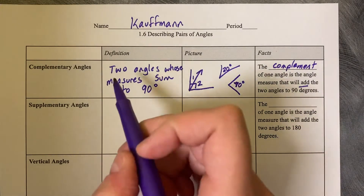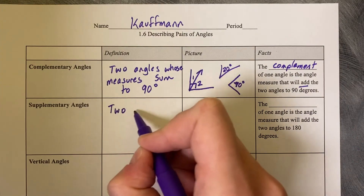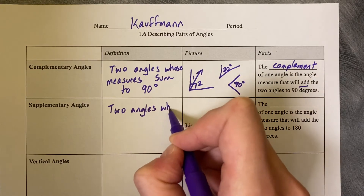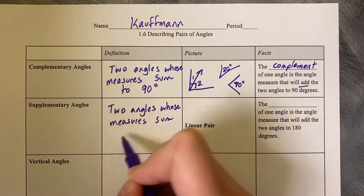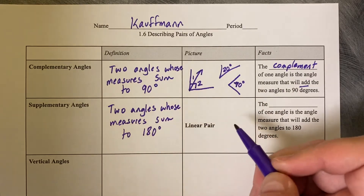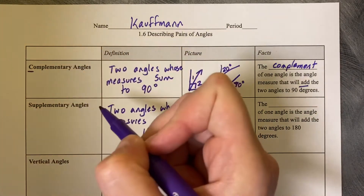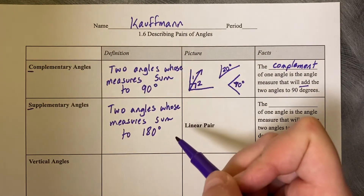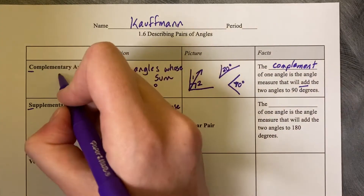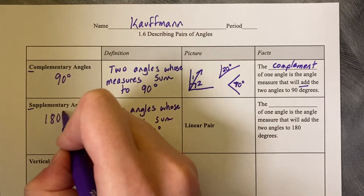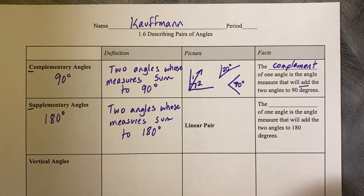A supplementary angle is two angles whose measures sum to 180 degrees. A way to remember the difference between supplementary and complementary is that C comes before S in the alphabet. So complementary is smaller than supplementary — 90 degrees versus 180 degrees. C comes before S, so 90 comes before 180 in size.